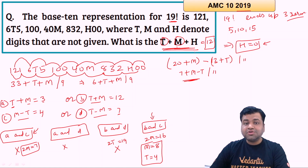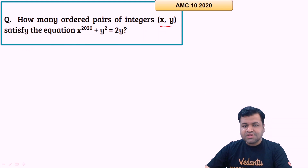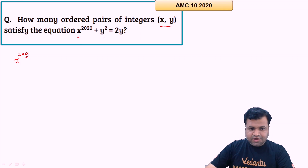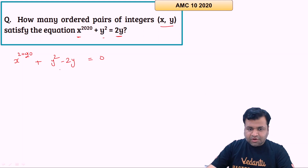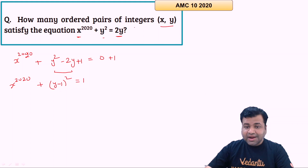Let's move to the next question. This is from AMC 2020. The question asks: how many ordered pairs of integers (x, y) satisfy the equation x^2020 + y² = 2y? We can rearrange: x^2020 + y² − 2y = 0. Completing the square gives x^2020 + (y−1)² = 1. Since we want only integer solutions and both terms are non-negative, this constrains the possibilities significantly.